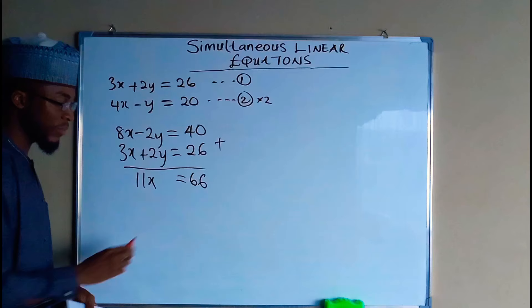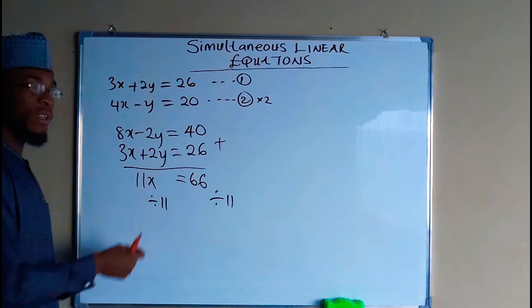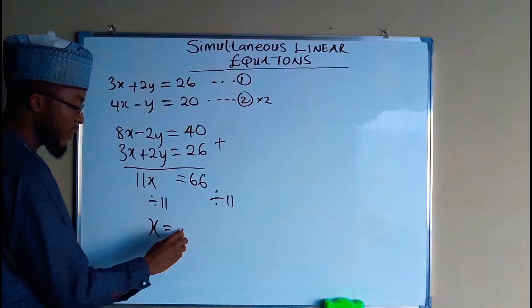Now we need to divide each side by 11, divide each side by 11 so that we have the value of x. So now x is equal to 66 divided by 11 which will give you 6.